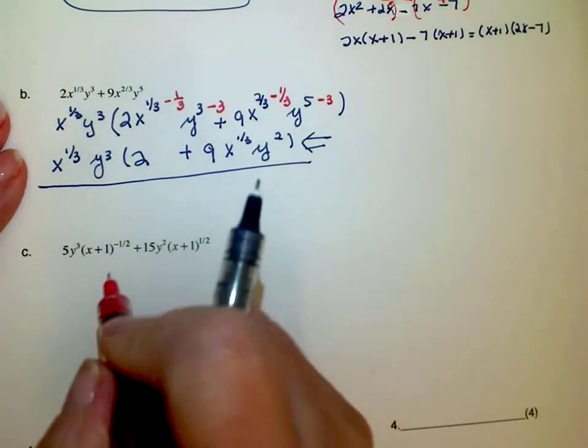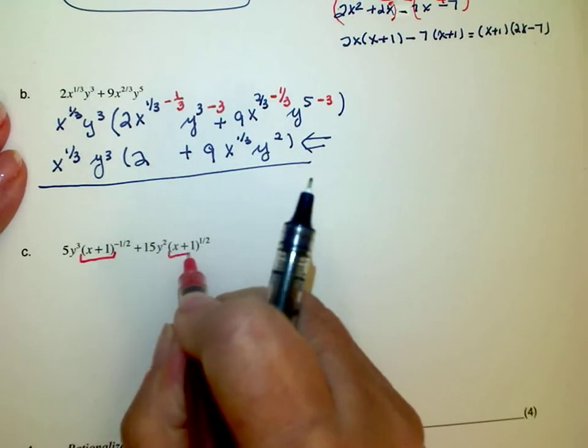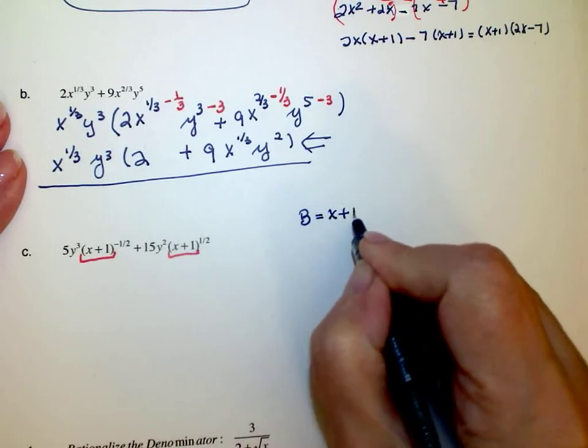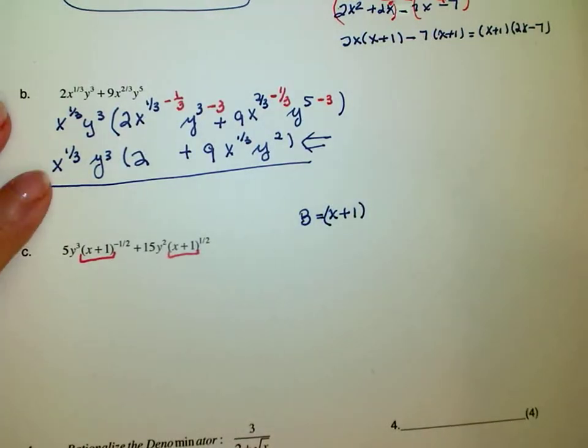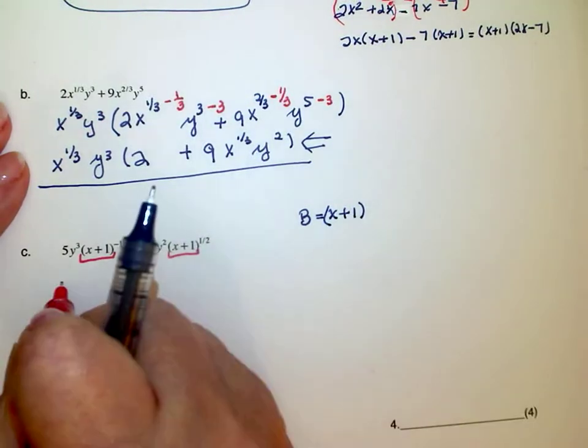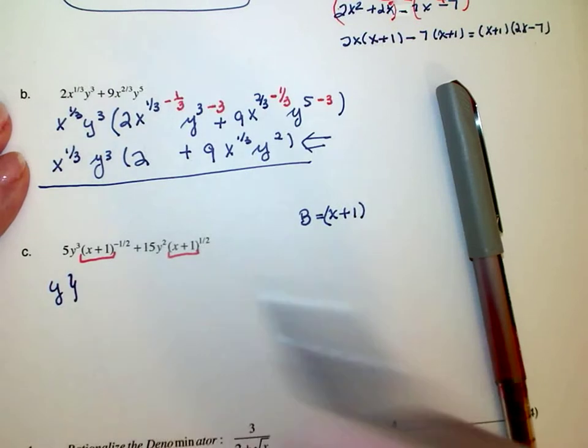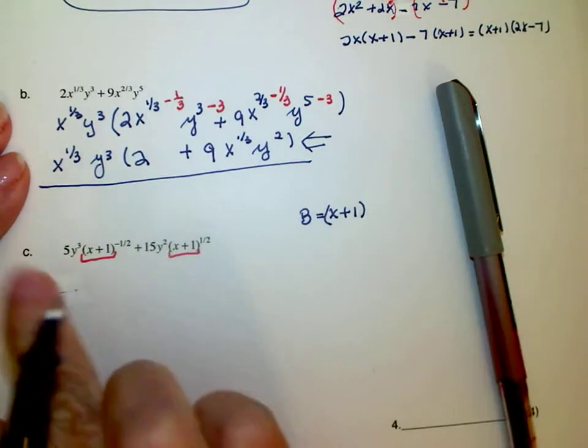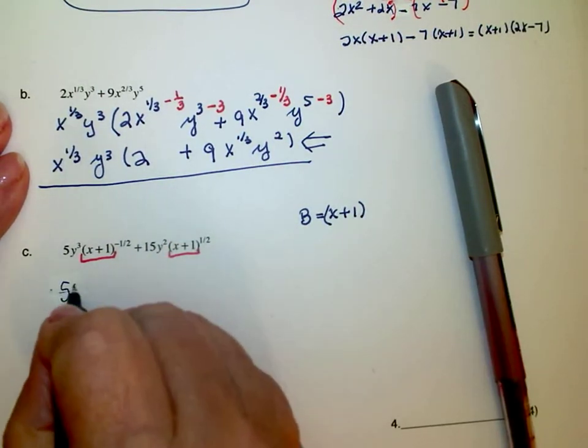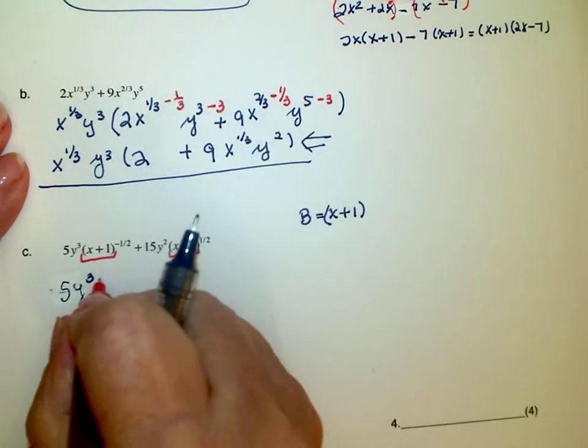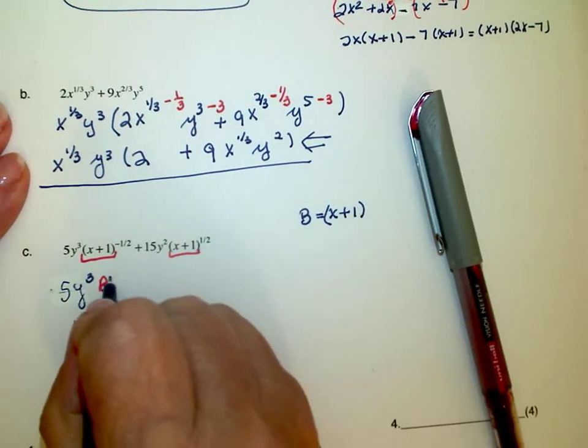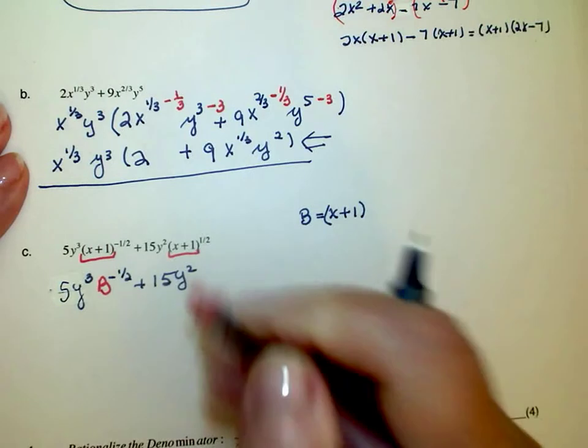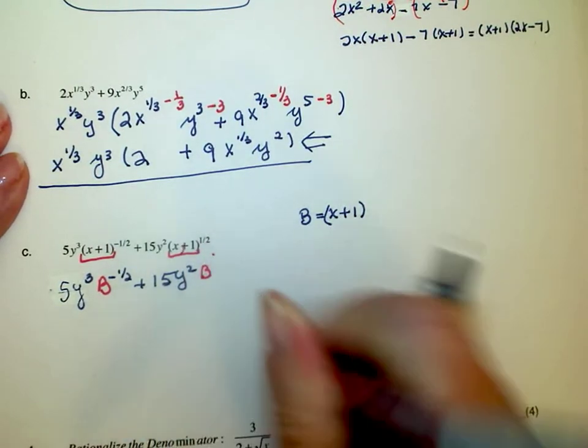Now in this particular instance I notice I have a log, so I'm going to let b be equal to x plus 1 and I'm going to put it in parentheses because I don't know what I'm going to have to multiply by in the end. So this is 5y cubed b to the negative one-half plus 15y squared b to the one-half.